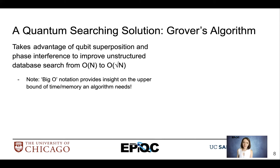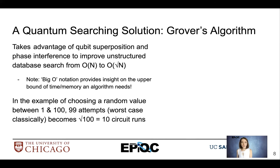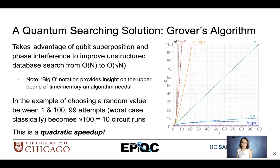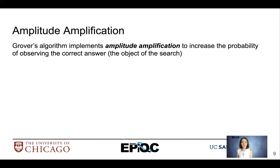Big O notation, on a very high level, means the upper bound of the amount of time or memory that an algorithm needs to come up with a solution. So in the example of choosing a random number between 1 and 100, 99 attempts at worst case classically would become √100, or 10 circuit runs, in the quantum case. This is a quadratic speedup. Looking at the chart, we see N reduced to √N. Amplitude amplification is one of the key components of Grover's algorithm that allows this to work.